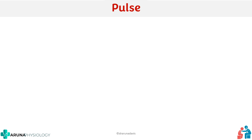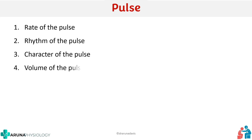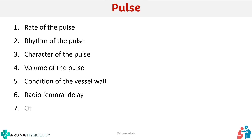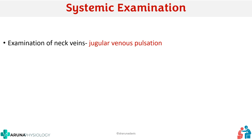Examination of pulse, including all its different attributes like the rate of pulse, rhythm, character, volume, condition of vessel wall, radio-femoral delay, and other peripheral pulsations — all must be checked thoroughly. I have done a separate video on how to examine the pulse as well as the other vital signs, so I'm not repeating it here. Similarly, another important thing is the examination of neck veins for jugular venous pulsations. I have done a separate video on JVP as well, since pulse and JVP are important components of cardiovascular system examination.